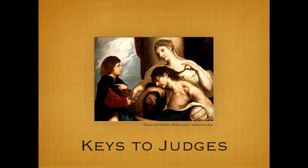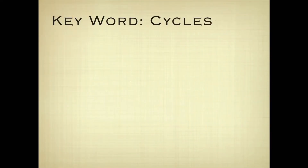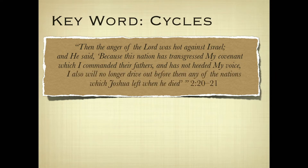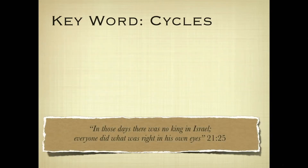Some of the keys to the Book of Judges include the key word 'cycles.' The anger of the Lord was hot against Israel because the nation transgressed his covenant and had not heeded his voice. He says, 'I also will no longer drive out before them any of the nations which Joshua left when he died.' This whole cyclical process is a fitting summary of the Book of Judges — no king, everyone did what was right in his own eyes.